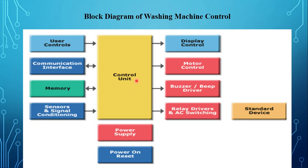Generally, the washing machine has various control knobs: load select knob, water inlet knob, mode select knob, and program select knob. The load select knob selects the number of clothes to be washed and the amount of water required. It has three settings: high, medium, or low. The water inlet knob selects hot water, cold water, or mixed water. The mode select knob allows the machine to operate in two modes: normal mode and save mode.